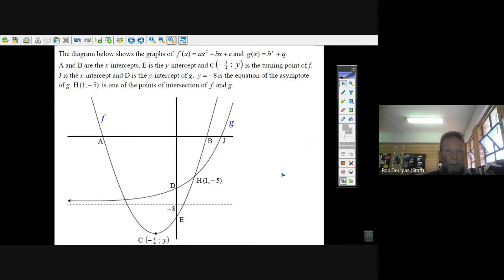Here is the parabola f. It's ax squared plus bx plus c. And there's an exponential equation, because I can see this dotted line. It's taking off just like an exponential equation. It's b to the x plus q. a and b are the x-intercepts of the parabola, and e is the y-intercept of the parabola right there.